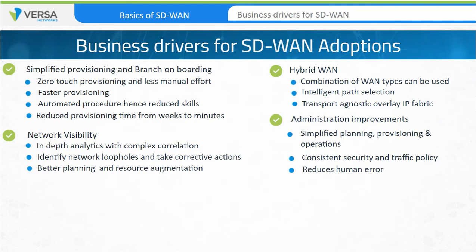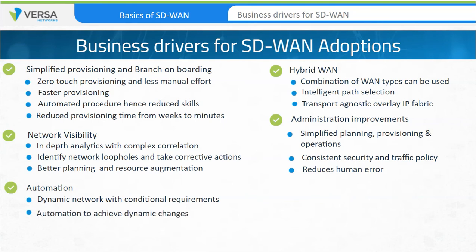The fifth business driver is automation. Modern networks are dynamic with a lot of conditional requirements. Automation helps achieve agility by making dynamic changes to the design and adapting to changes in the network without manual intervention. An example of this would be monitoring WAN link usage and automatically reducing traffic flow over an interface once it has reached a monthly threshold. This can be done without user intervention, as can many other tasks in the network.